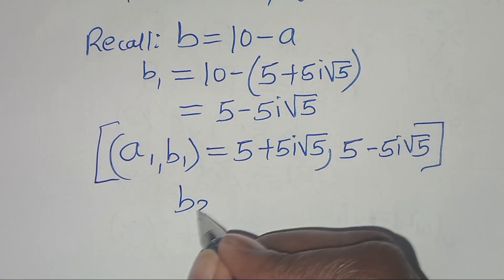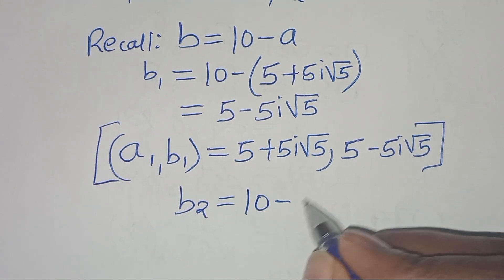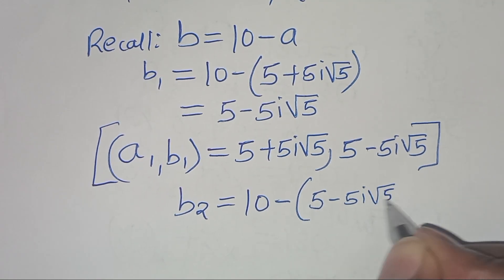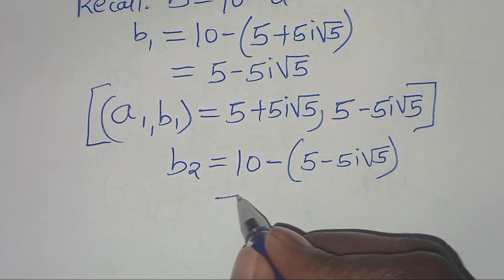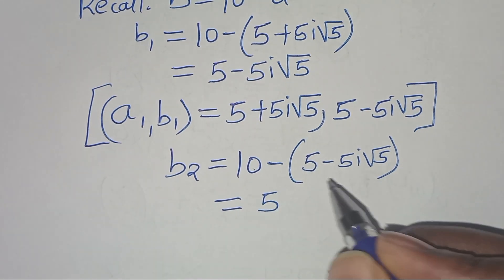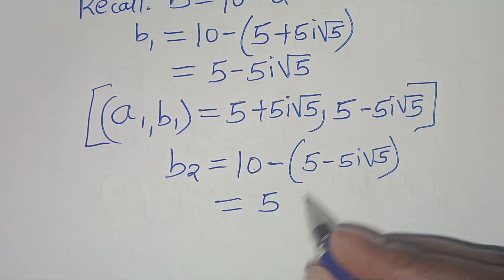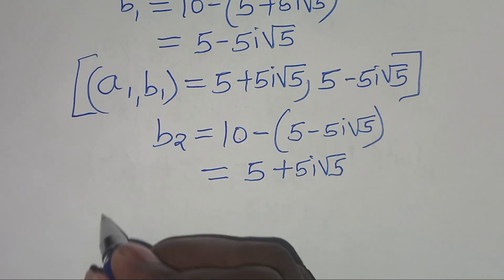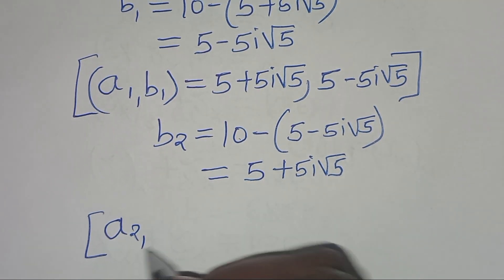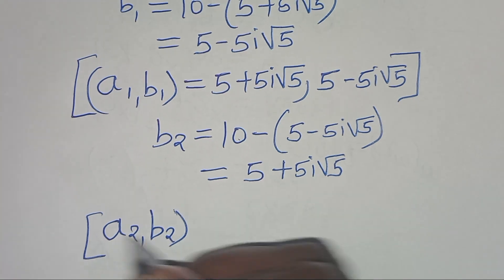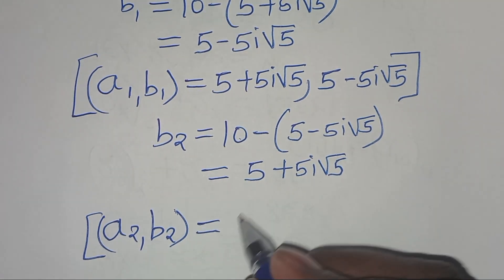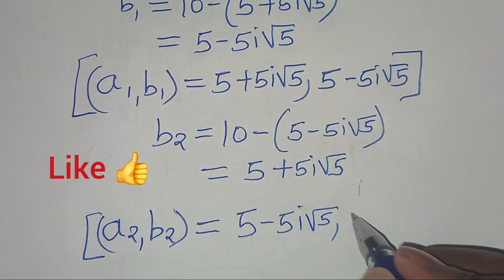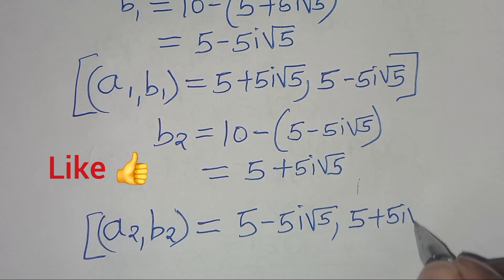Now let's find B2, which equals 10 minus A2. A2 is 5 minus 5i√5. So B2 equals 10 minus (5 minus 5i√5), which gives 10 minus 5, which is 5, minus times minus 5i√5, which becomes plus 5i√5. So the second solution set A2, B2 is (5 minus 5i√5, 5 plus 5i√5).